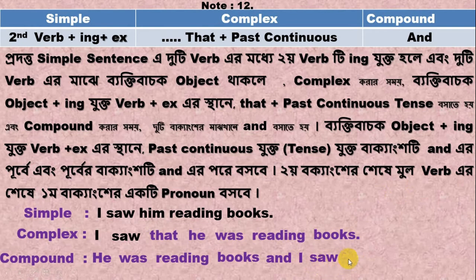He was reading books. He was reading books. That is the past continuous form used in the complex sentence transformation.